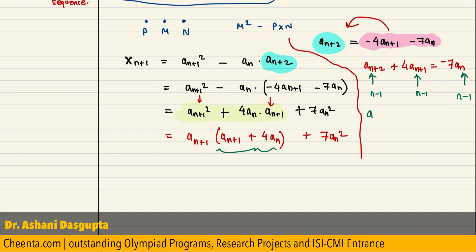So, you have a(n-1+2) plus 4 a(n-1+1) equal to minus 7 a(n-1). So, this is a(n+1) plus 4 an equals to negative 7 a(n-1).